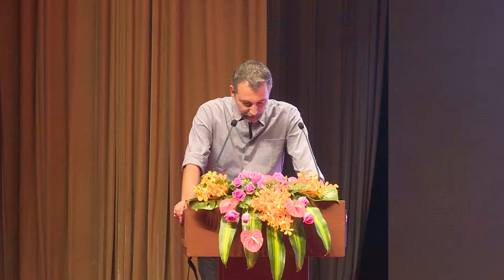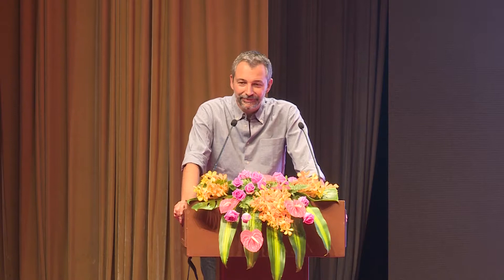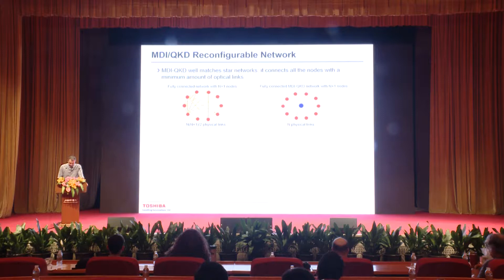MDI-QKD is particularly suitable for star networks. This is a star configuration with a central node and three satellite nodes. For a fully connected network with N+1 nodes, you need N² physical links, whereas with MDI-QKD and N+1 nodes, you only need N physical links — convenient from a practical standpoint.